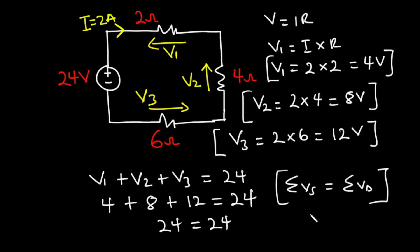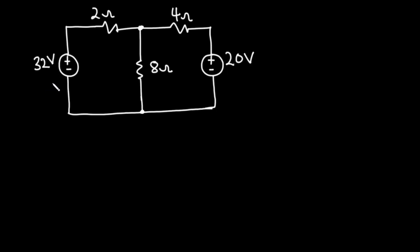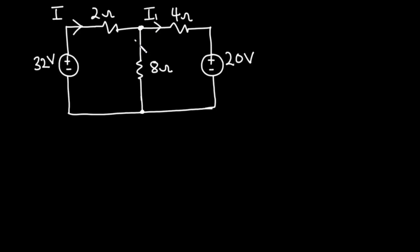Now let's solve a more complex example combining both KVL and KCL. In this example we have 2 voltage sources, the 32V source and the 20V source, and 3 resistors: the 2 ohms, 4 ohms, and 8 ohms resistors connected in the circuit. We need to find the current in all parts of the circuit. First we assign current I approaching the junction, then I1 leaving the junction, and then by KCL, I minus I1 leaves the junction flowing through the remaining path.